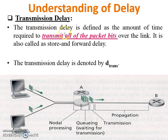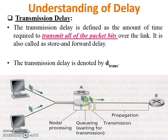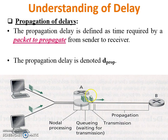Transmission delay. The transmission delay is defined as the amount of time required to transmit all the packet bits over the link. It is also called store and forward delay. In this figure, all the packet bits come from the output port of the router to the communication channel. So it is called transmission delay.